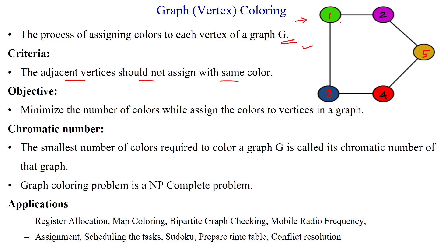For example, if there is an edge between vertex one and vertex two, and vertex one has the green color, then vertex one's adjacent vertices — three and two — should not have the same color green. We have to assign different colors to adjacent vertices. The objective of graph coloring is to minimize the number of colors while assigning colors to each and every vertex in the given graph.